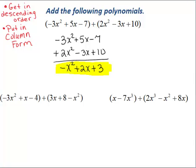Looking at the next polynomial expression, again we're going to get each in descending order. We know that the first is already in descending order, so we can just simply rewrite it: minus 3x squared plus x minus 4. Now the second expression is not in descending order, but we will put it in descending order.